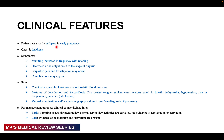Clinical features include the patient being nulliparous in early pregnancy, with an insidious onset. Symptoms include vomiting that increases in frequency with retching and decreased urine output, which may progress to oliguria, along with epigastric pain and constipation. On examination, check vitals including weight, heart rate, and orthostatic blood pressure. Features of dehydration and ketosis include a dry coated tongue, acetone on the breath, tachycardia, hypotension, and a rise in temperature. Jaundice may appear as a late feature. Vaginal examination and sonography will simply confirm that the patient is pregnant.